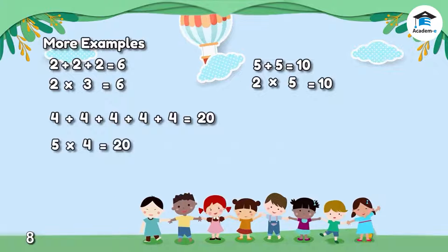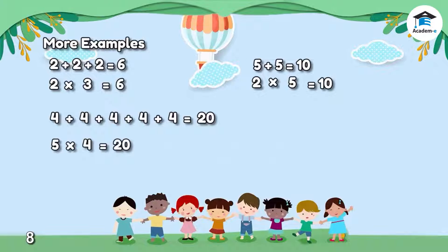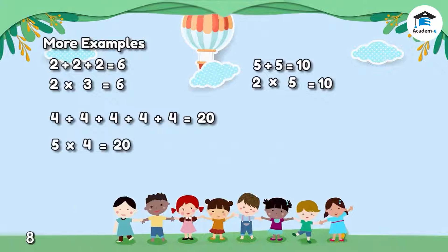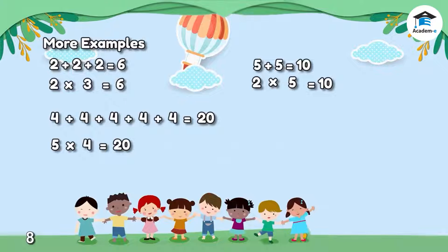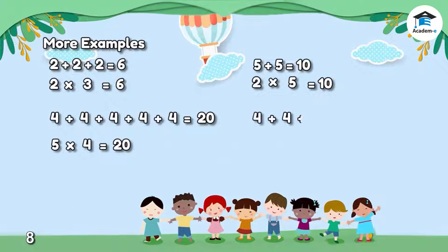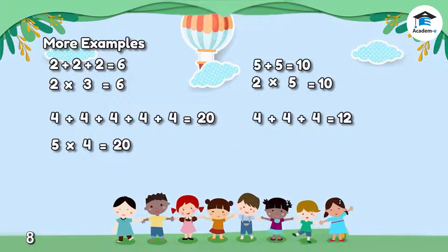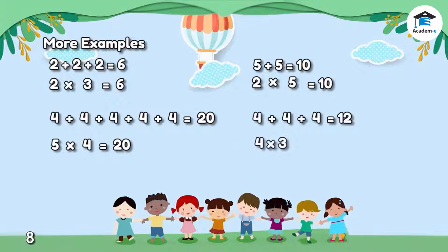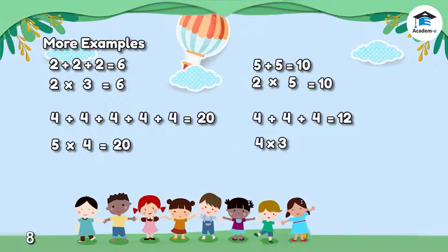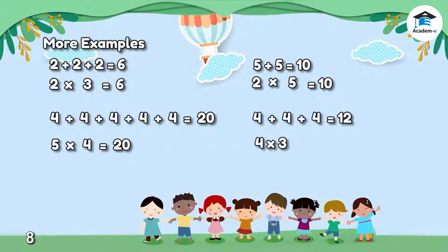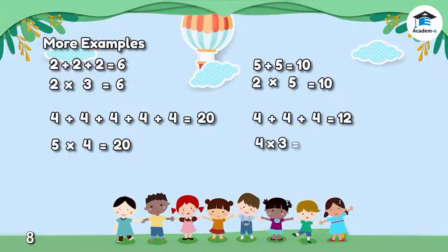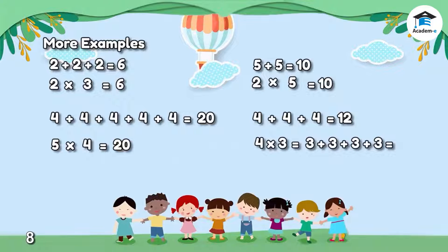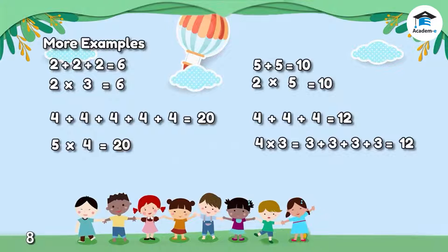3 by 4 is equal to what number? One way to interpret this is to say that there are 3 groups of 4s. So we could say that this is equal to 4 plus 4 plus 4, which is equal to 12. Just out of curiosity, what do you think is the answer to 4 times 3? One way to interpret this is to say that there are 4 groups of 3s. So we could say that this is equal to 3 plus 3 plus 3 plus 3, which is also equal to 12.